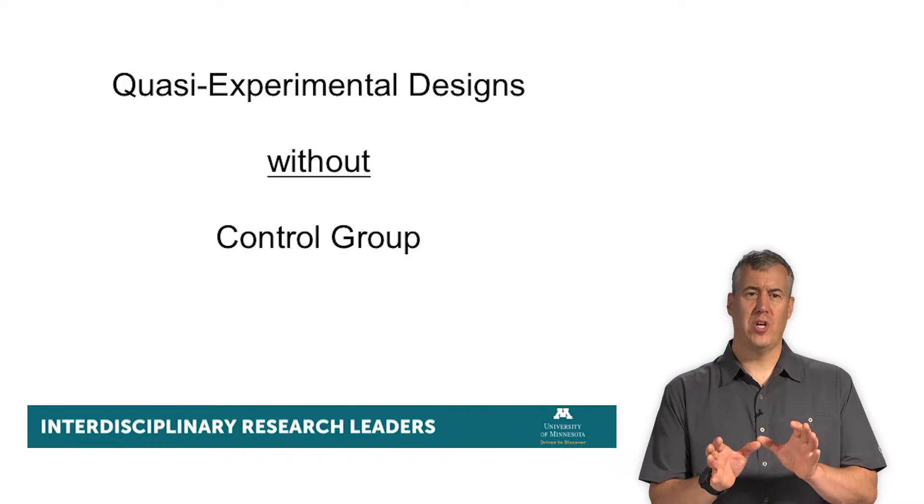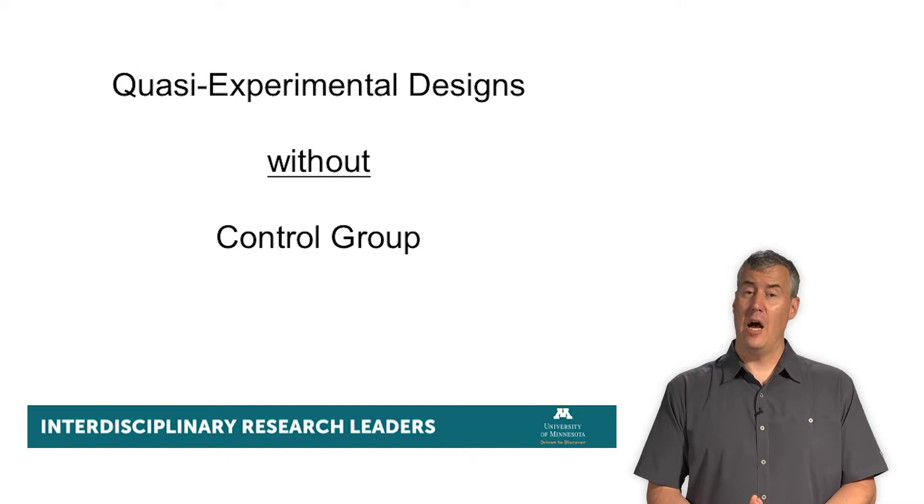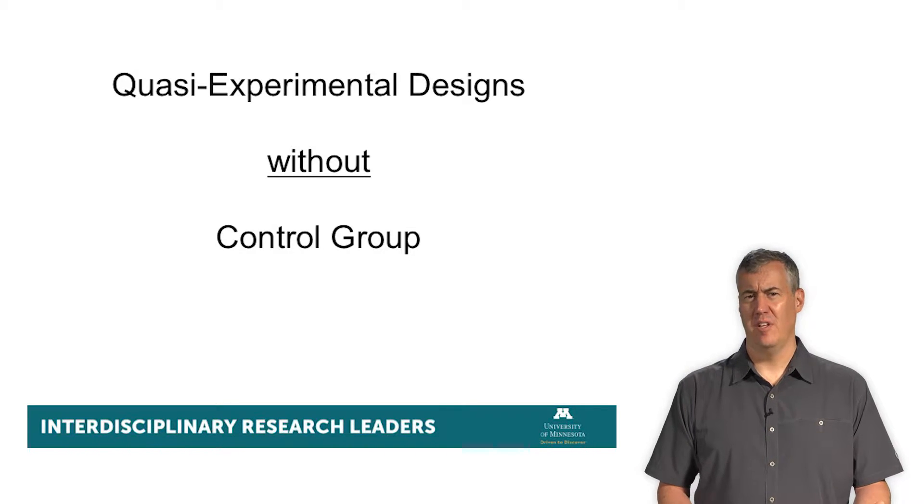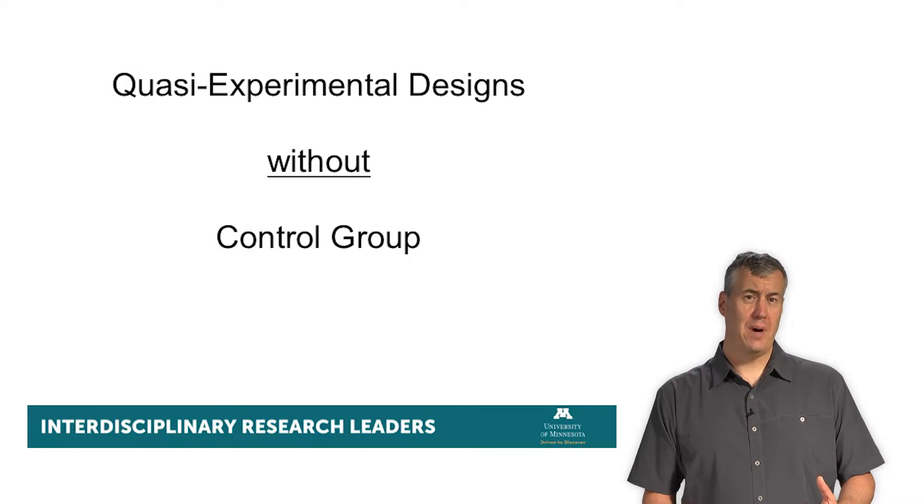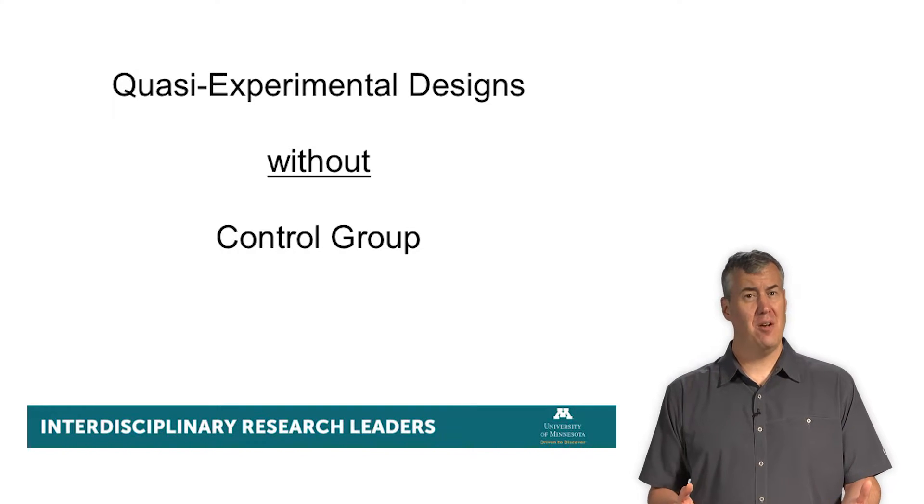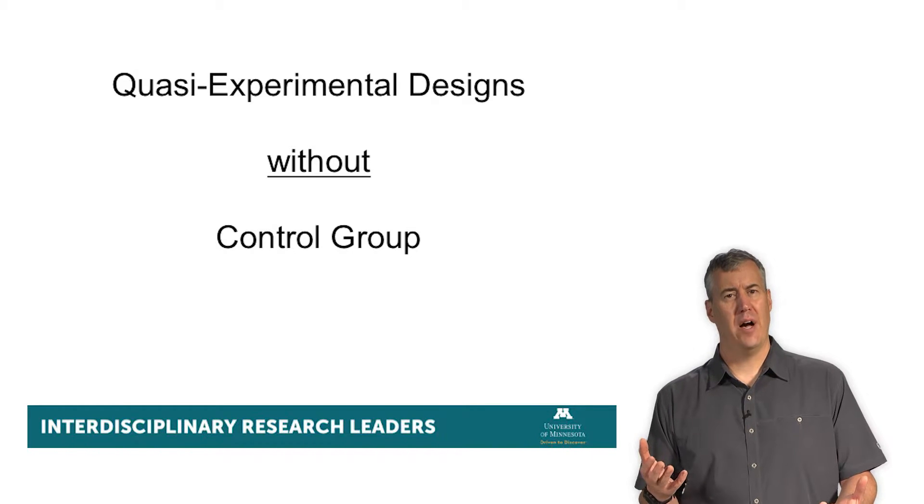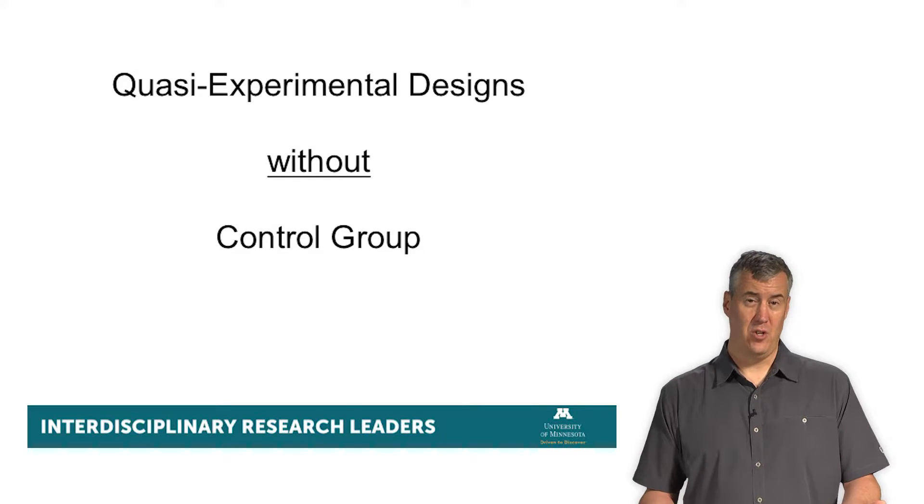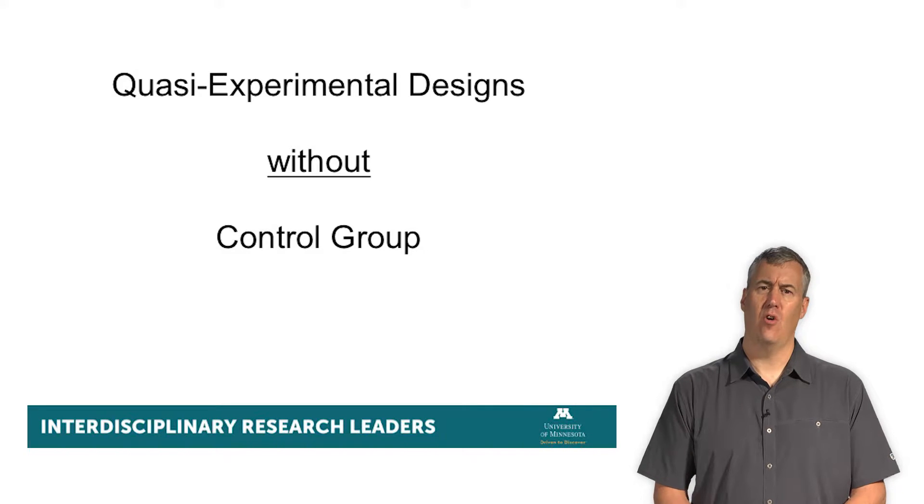Let's start first with what we call quasi-experimental designs without a control group. So quasi-experimental means we're not actually randomizing. But the idea here is we don't randomize, therefore people are deciding if they're going to be treated or not, which means people who are treated are somehow different than those who aren't. When people get to choose that stuff, which we hope they do in real life, this makes the science all the more challenging.